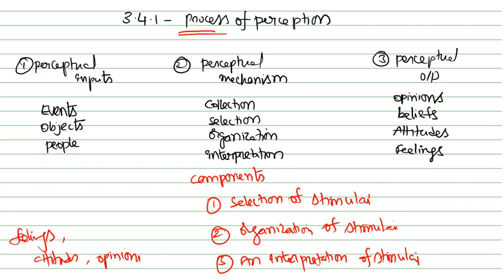The third component is interpretation of stimuli — how these are perceived and how you are going to interpret them. Individuals try to judge their observed things: whether they are good or bad, beautiful or ugly. There might be a probability of a wrong interpretation or making incorrect judgments.